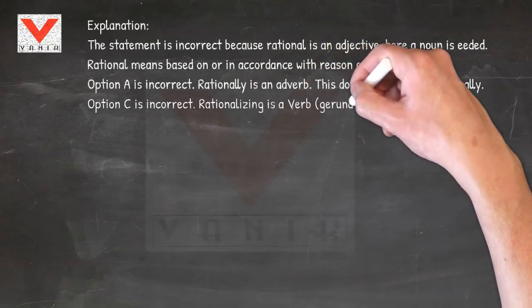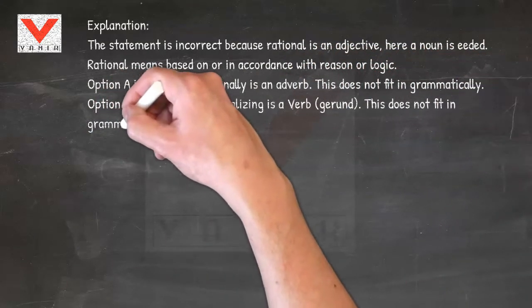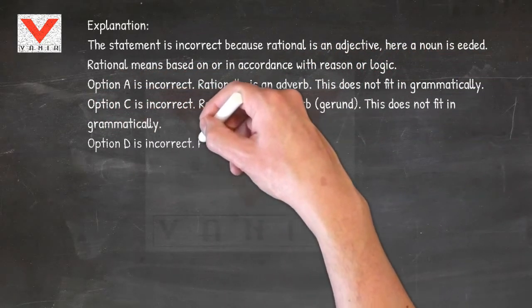Option C is incorrect. Rationalizing is a verb (gerund). This does not fit in grammatically.